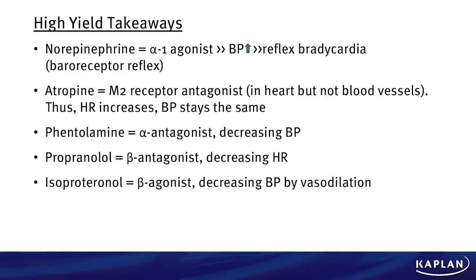Some high-yield takeaways from this problem. Know the drugs — that's the biggest thing. Norepinephrine is an alpha-1 agonist that raises blood pressure via vasoconstriction. What happens to heart rate? We saw in the diagram it goes down — because this animal had intact reflexes. The baroreceptor reflex will cause a reflex bradycardia with an increase in blood pressure. Atropine, on the other hand, is a muscarinic M2 receptor antagonist, meaning it acts in the heart, not in the blood vessels — so no impact on blood pressure. It simply removes the parasympathetic side of things, increasing heart rate while blood pressure stays the same. That's why that was our answer choice.